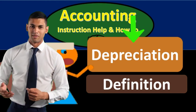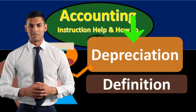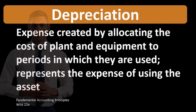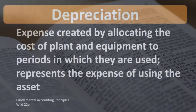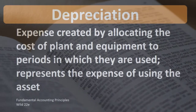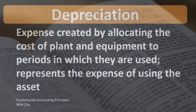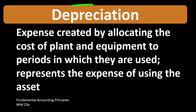In this lecture we're going to talk about the definition of depreciation. According to Fundamental Accounting Principles, 22nd edition, the definition of depreciation is: expense created by allocating the cost of plant and equipment to periods in which they are used — it represents the expense of using assets.